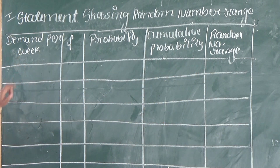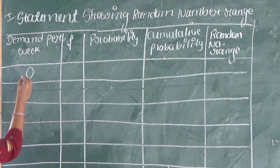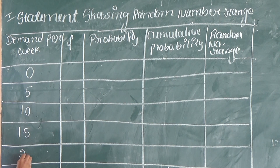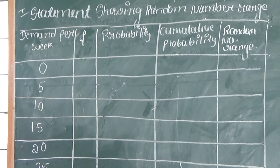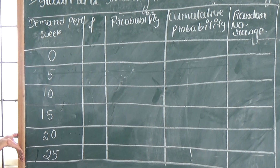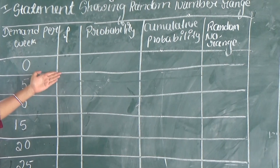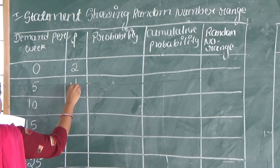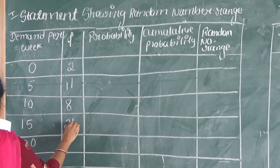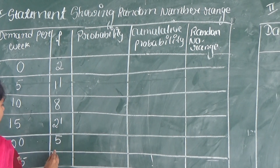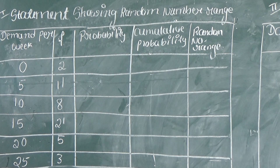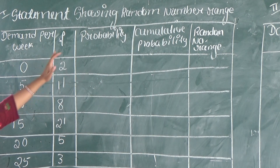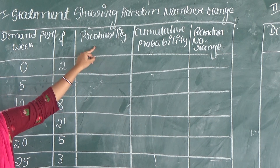So here the demand per week is 0, 5, 10, 15, 20, and 25 — this data is already given in the question. And next, the frequency is 2, 11, 8, 21, 5, and 3. These two data columns are already given in the question. Now we have to calculate probability.